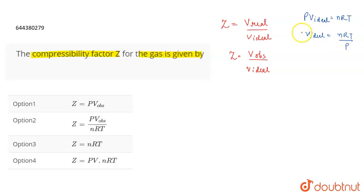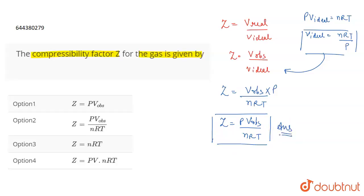So what we are going to do is we are going to replace V ideal by this value nRT by P. So this becomes Z is equal to V observed divided by nRT into P. So therefore, what does the formula become? PV observed divided by nRT. So this is the formula for the compressibility factor of a gas.